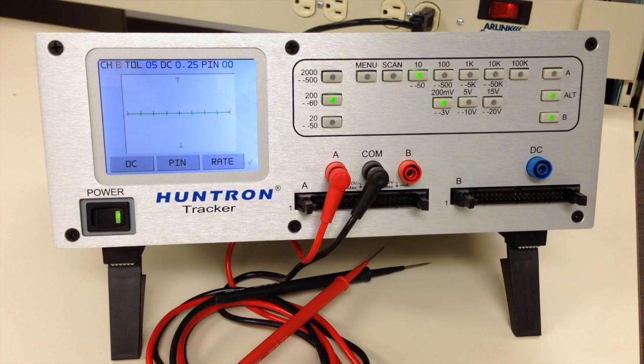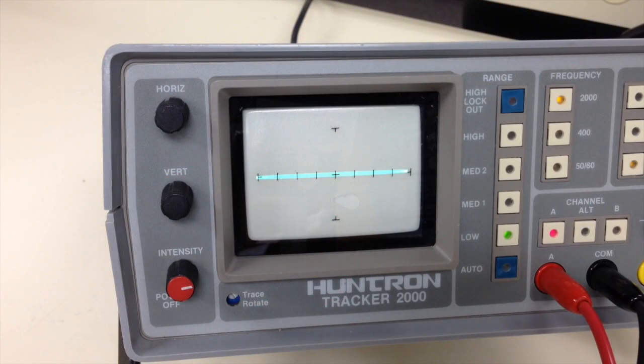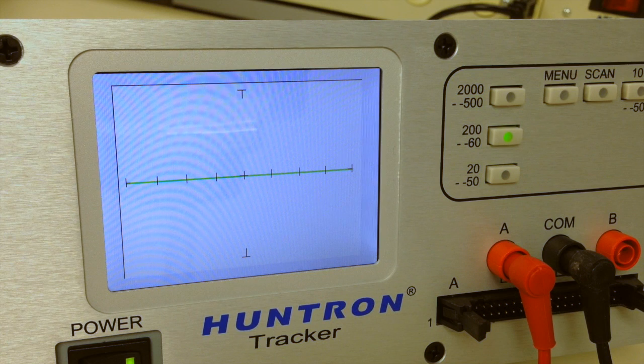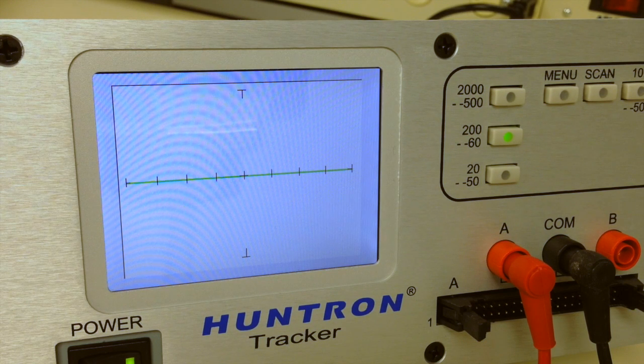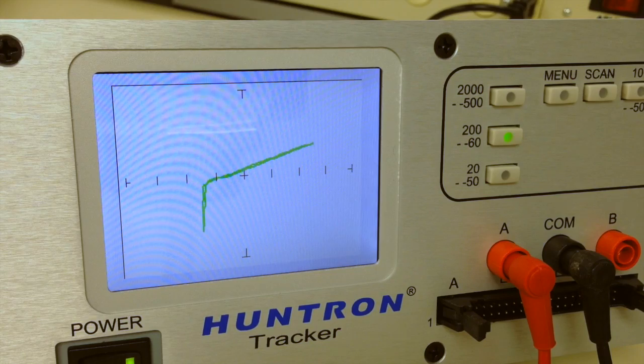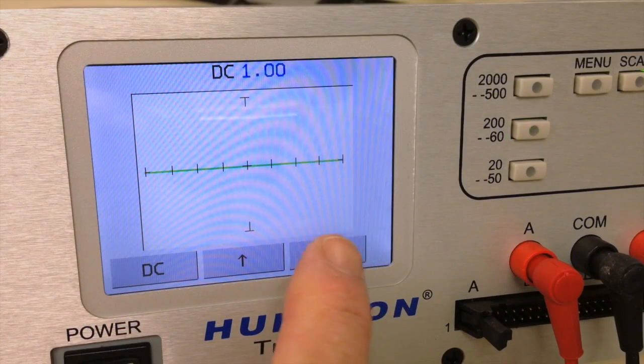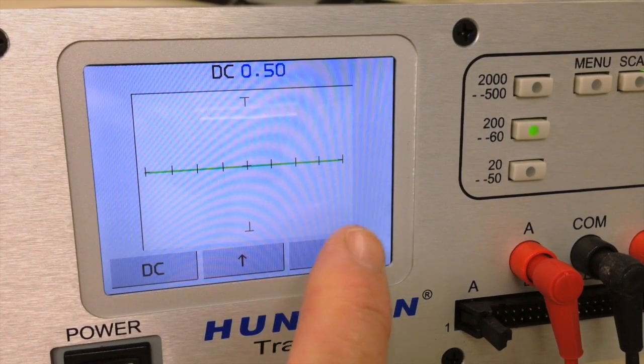Let's start with the most obvious difference and that is the Tracker display. The Tracker 2000 had a CRT-based display and the Tracker 2800 uses an LCD. While some long-time Tracker users may prefer the real-time aspect of a CRT, the color touchscreen and screen text capabilities give the Tracker 2800 LCD some distinct advantages.